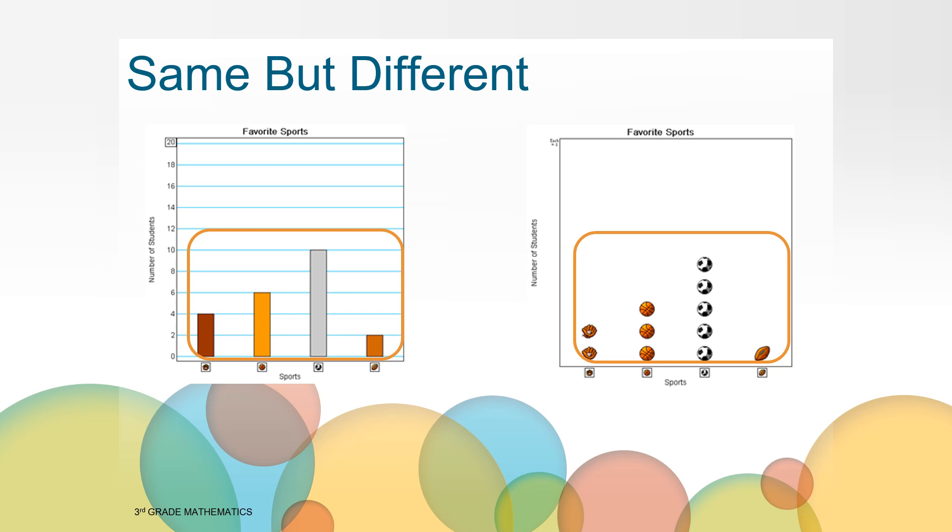But maybe you also noticed the way the data is shown in bars on the graph down the left is different than the way they are shown as pictures on the right. And did you notice that the bar graph includes numbers to help you count the data? How is this different than the pictograph? That's right. In the pictograph, you have to count the pictures to find out the total for each group.